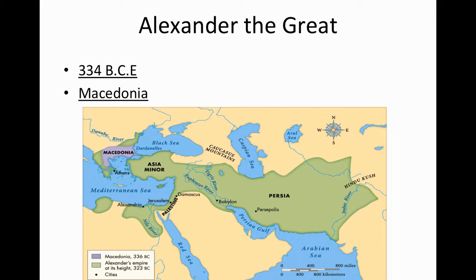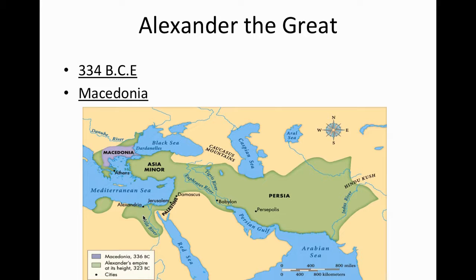Let's move on to Alexander the Great. Alexander the Great was not Greek. He lived in this region north of Greece called Macedonia, and he's actually famous for being one of the great empire builders. Around 334 BCE, he had a huge empire — not as large as the Roman Empire, but he was the conqueror of all these worlds. Especially Egypt — he established a city called Alexandria in Egypt.